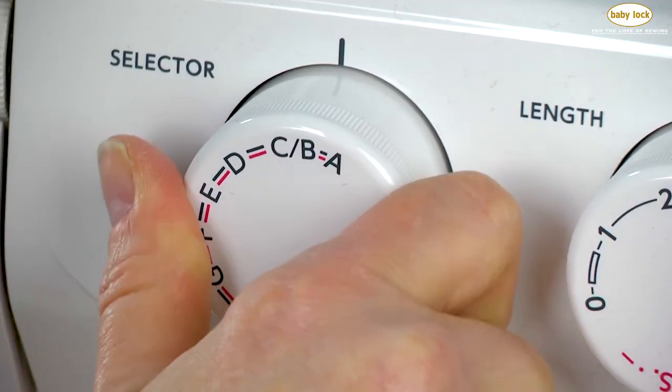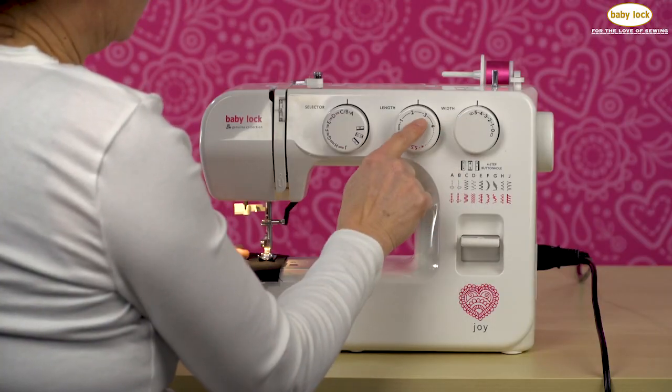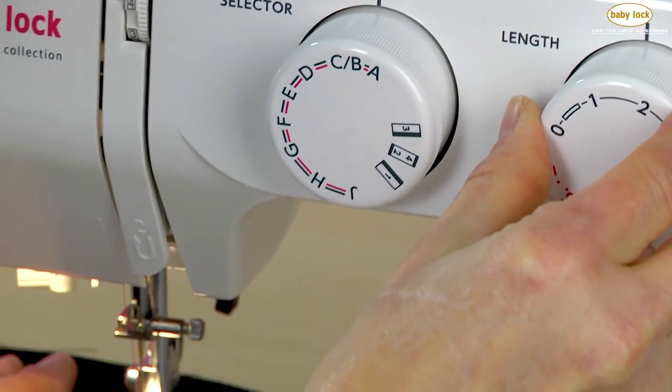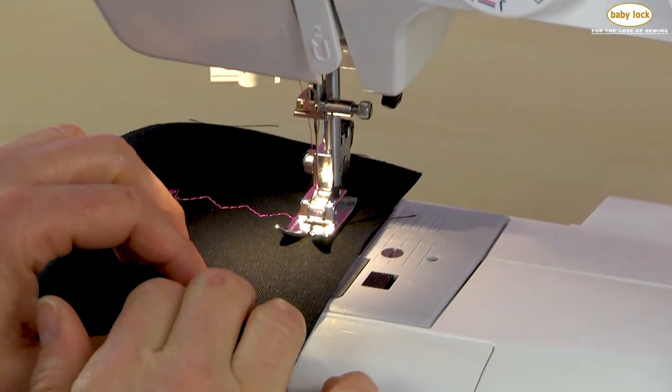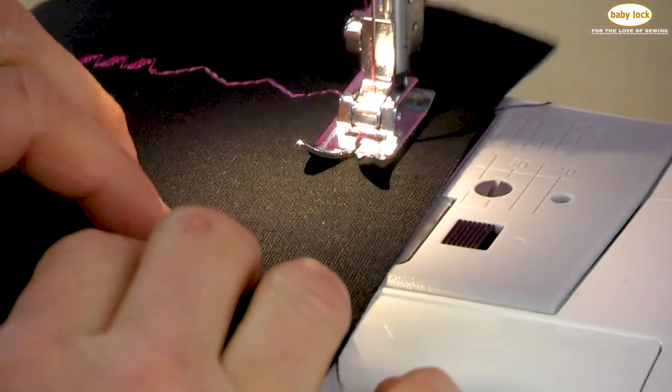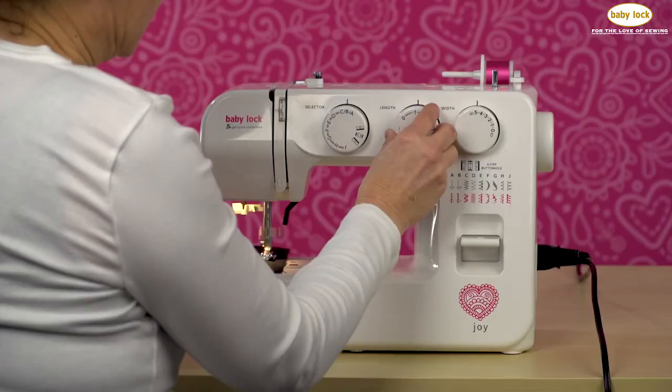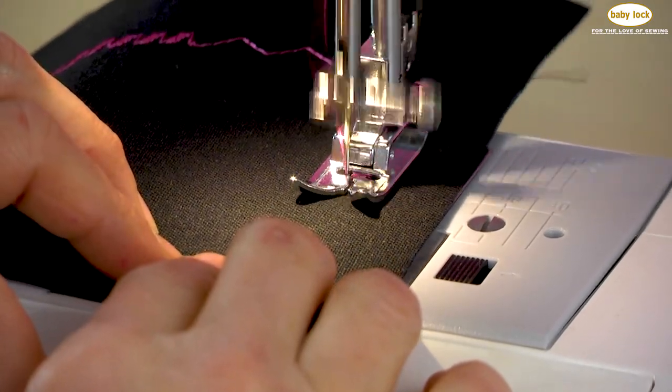And then our last stitch that we're going to stitch out will be the zigzag stitch or C. Turn the dial to C. We're going to leave our width at 5 and I'm actually going to take my stitch length down because I want it to be more of a satin stitch. We're going to start at almost 1 and take a look at that. I can see already I need to take it down a little bit more so I get that satin effect.